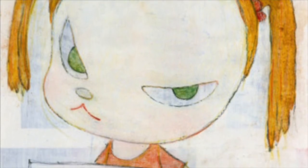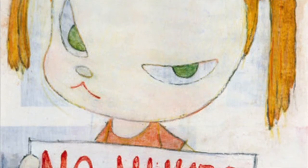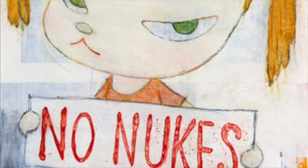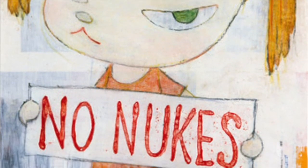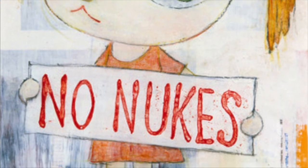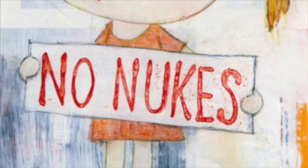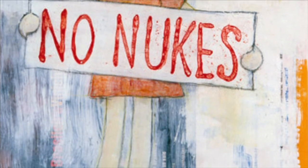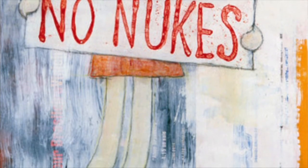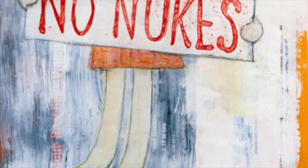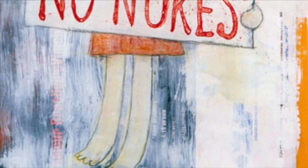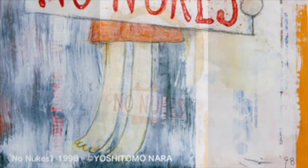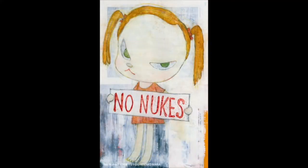I want to look at how Nara has drawn this girl. It is very childlike. The feeling I get is that the children are going to be affected — that's why a child is holding up the sign. The children are the ones who are going to be hurt by the nuclear arms.